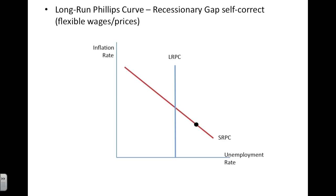How does a recessionary gap self-correct? It is the same logic that we use for our short-run aggregate supply curve. As people's expectation of inflation fall, their demand for wages will also fall. Sticky wages will become flexible. As businesses are able to produce more in the short run, this brings us back to long-run equilibrium. Remember that a shift to the right of SRAS is reflected as a shift to the left in SRPC. It's often helpful to set up the aggregate supply and demand model next to this graph to show the cause-and-effect relationship and the connection between SRAS and SRPC.